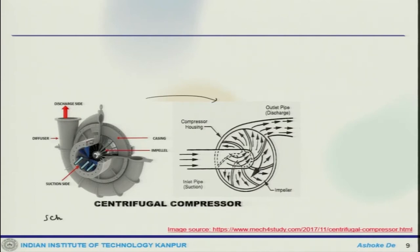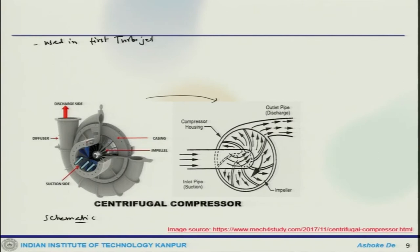Looking at the schematic of the components, there is a suction side, these are impellers, then there is a casing, and there is a diffuser — these are all different components. As mentioned, this was first used in the earlier days in the first turbojet engine, which was developed by Frank Whittle and Von Ohain.